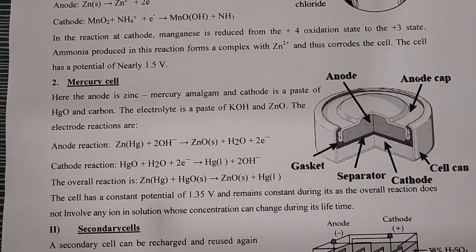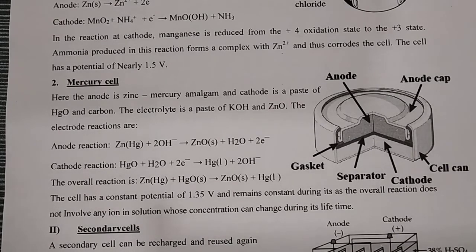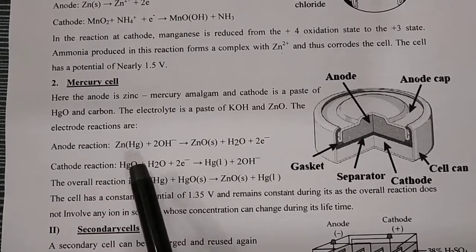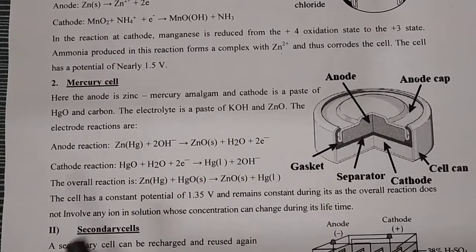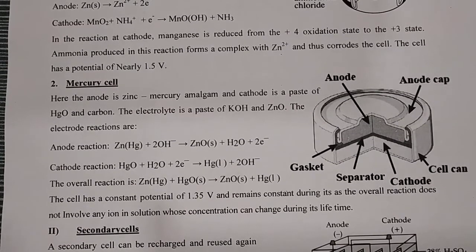The 1.35 volt output remains constant during the cell's life because the overall reaction does not involve any ion — no ion is generated, so whenever you use it, you always get a constant 1.35 volt output, whose concentration cannot be changed during the cell life. Remember the anode reaction: Zn plus 2OH⁻ gives ZnO plus H2O plus 2 electrons, and cathode: HgO plus H2O plus 2 electrons gives Hg plus 2OH⁻. Primary cell summary: dry cell (Leclanché cell) and mercury cell.